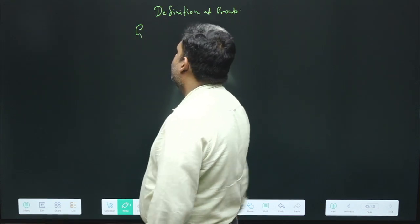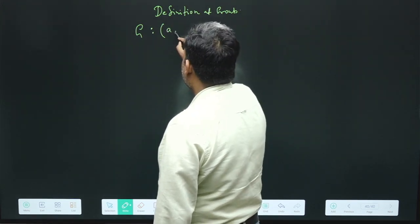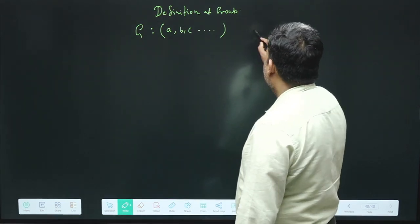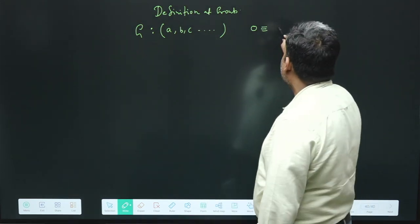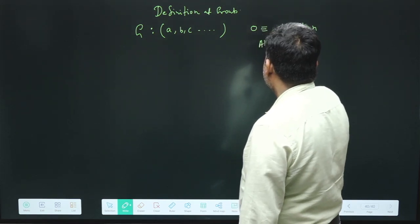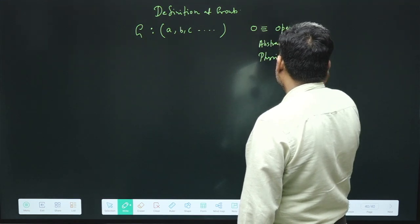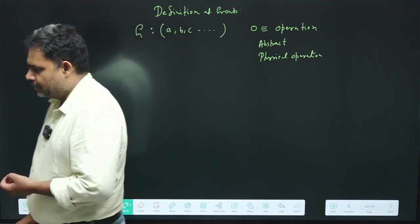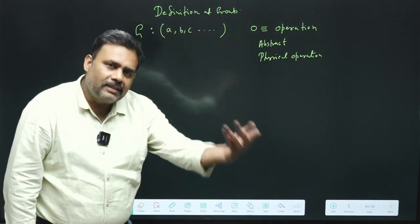You can define a group as a collection of some elements — a, b, c, and so on. We also have to define a multiplication, but that is not a general number multiplication. This multiplication is some type of operation — it may be an abstract operation or it may be a physical operation. For example, rotation is one very beautiful example of a physical operation. You define elements and the operation between them, and sometimes the operation itself is part of the group.